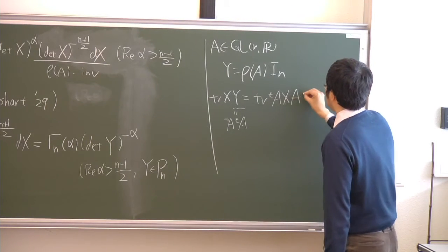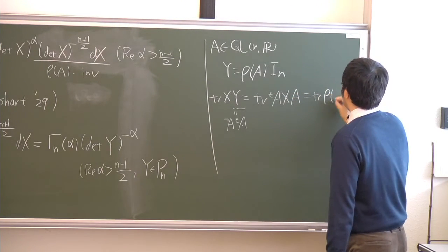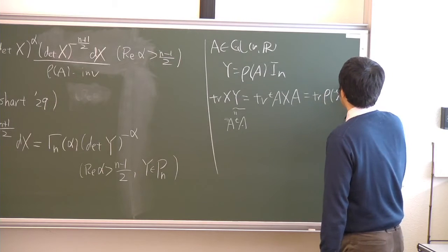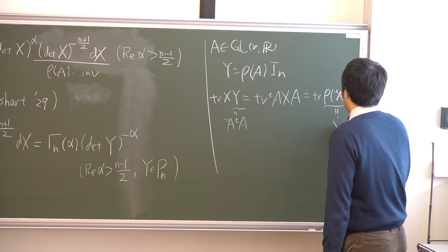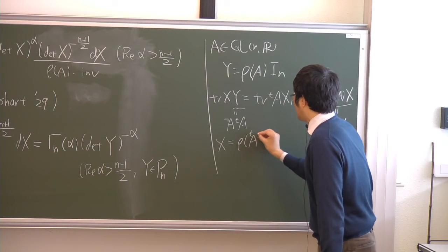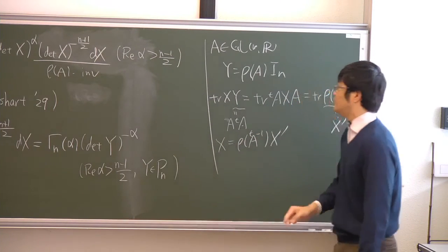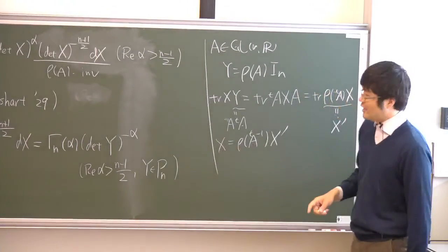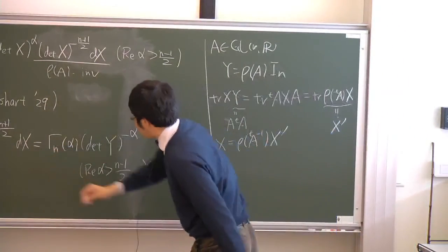we can write this in the trace. So this is ρ transpose A X. So I write this as X prime. So X equals ρ transpose A inverse X prime. So using this change of variable, we can write the left hand side.